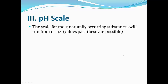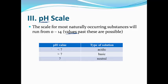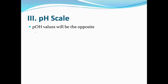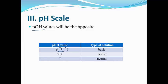Now look at the pH scale. For most naturally occurring substances it runs between zero and 14, though the scale is actually infinite since it's based on H-plus concentrations. At 25 degrees Celsius: if pH is less than 7, it's acidic; if greater than 7, it's basic; and if it is exactly 7, it's neutral. These values only apply at 25 degrees Celsius. You can also have a pOH scale — since it's the opposite of pH, the values are reversed: less than 7 is basic, greater than 7 is acidic, and it's still neutral at 7. Again, this applies at 25 degrees Celsius.